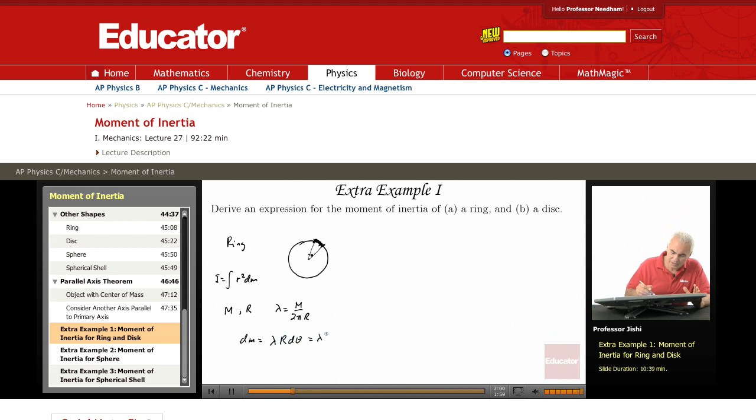So lambda r, alright, let's put for lambda, from here lambda r is just m over 2 pi. So lambda r is just m over 2 pi d theta. This is dm.